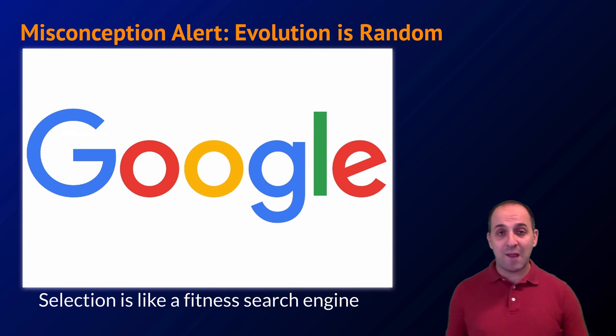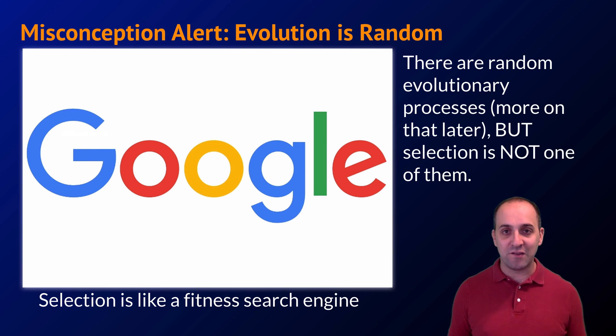We're going to pause here and talk about another misconception that people have when thinking about evolution, which is the idea that evolution is a random process. There are certainly random evolutionary processes, but we haven't talked about any of those yet. Natural selection is not a random evolutionary process. Natural selection is driving the adaptation of populations through the selection of particular phenotypes, as determined by their environmental fitness. That is the exact opposite of a random process. The analogy I like to think about when thinking about selection is a search engine. When I go to Google and type in what I'm looking for, Google searches through the internet, selects all of the results that match what I'm looking for, and brings them back to me.